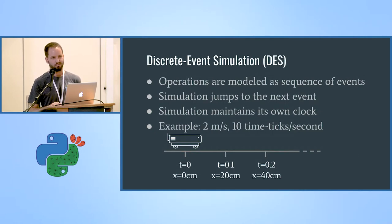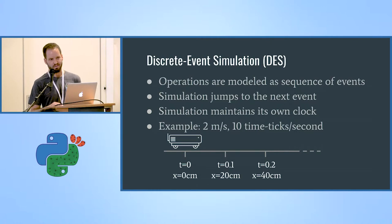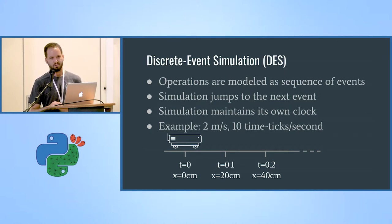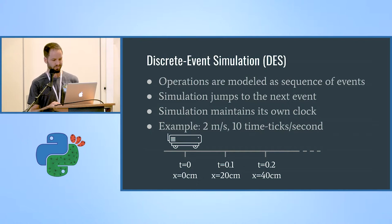Now I'll describe the way we simulate. The approach is called discrete event simulation. In this approach, continuous operations are simulated by a sequence of events. The simulation runs an event, calculates the new state of the component being simulated, and then immediately moves to the next event — even if some time should pass between events. The simulation uses its own clock and not the system clock, and that's how we can run faster than real time — hours of real time in minutes of simulation.